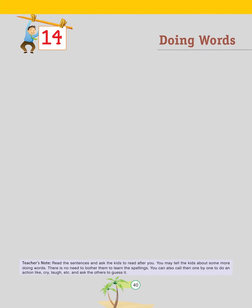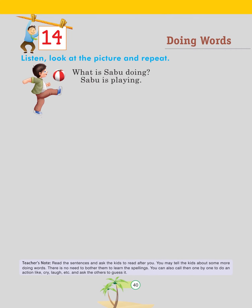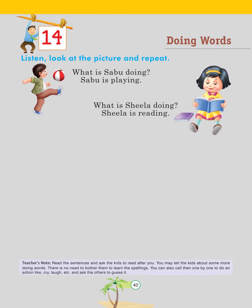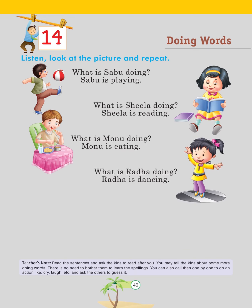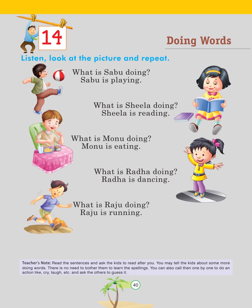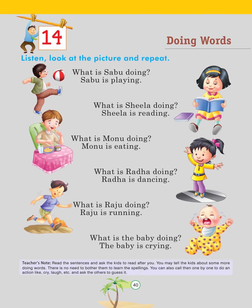Chapter 14: Doing Words. Listen, look at the picture and repeat: What is Sabu doing? Sabu is playing. What is Sheila doing? Sheila is reading. What is Monu doing? Monu is eating. What is Radha doing? Radha is dancing. What is Raju doing? Raju is running. What is the baby doing? The baby is crying. Teacher's note: Read the sentences and ask the kids to read after you. Tell the kids about more doing words — call them one by one to do an action like cry, laugh, etc., and ask the others to guess it.